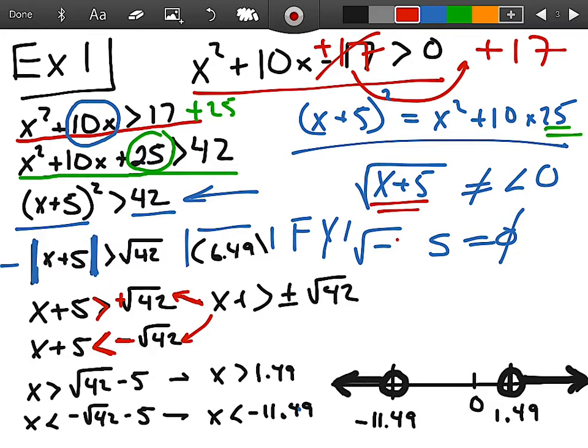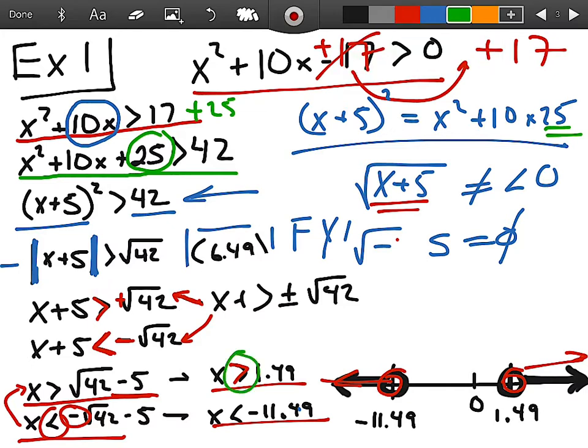So in the end, you get x is greater than square root of 42 minus 5, and then x is less than negative square root of 42 minus 5. You get your two points. You follow your arrow. 1.49 goes to the right and negative 11.49 goes to the left. Notice that they're both open circles because they are non-inclusive.